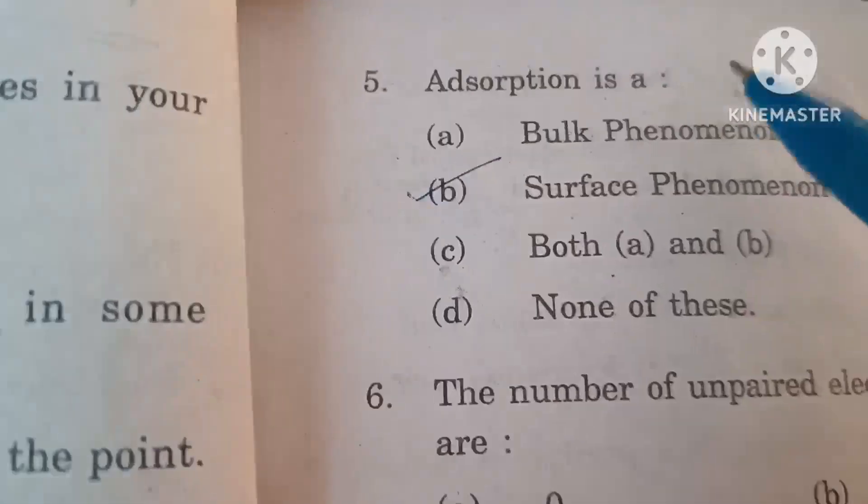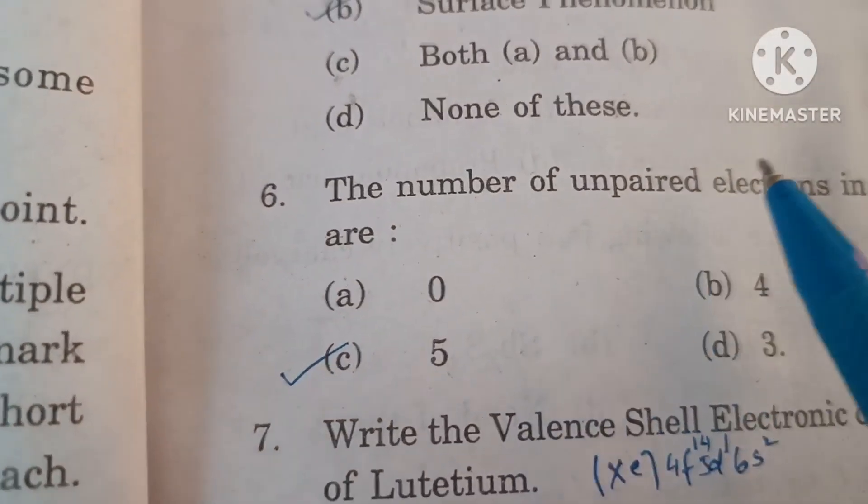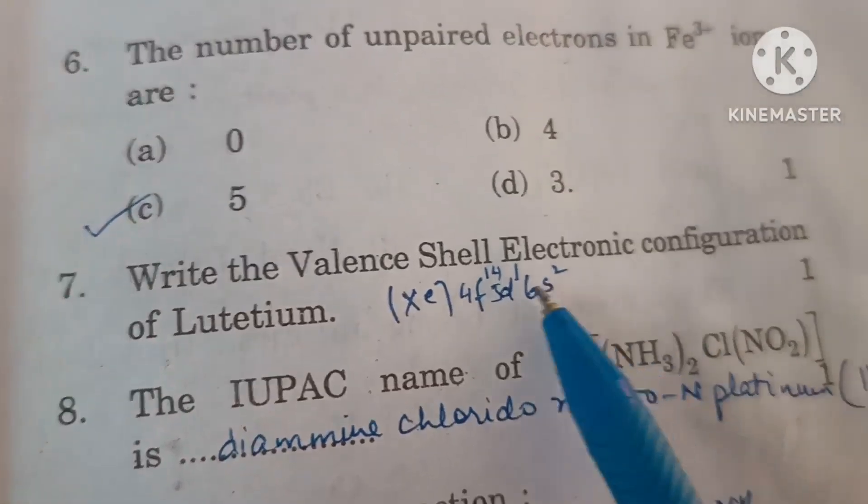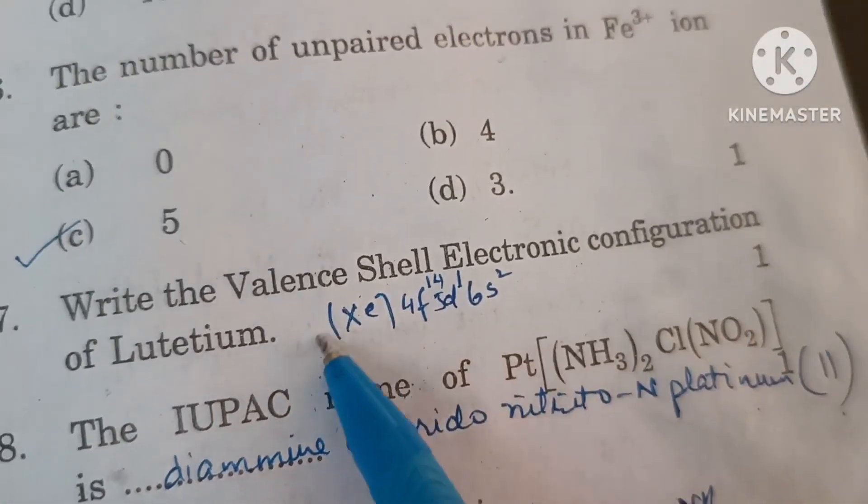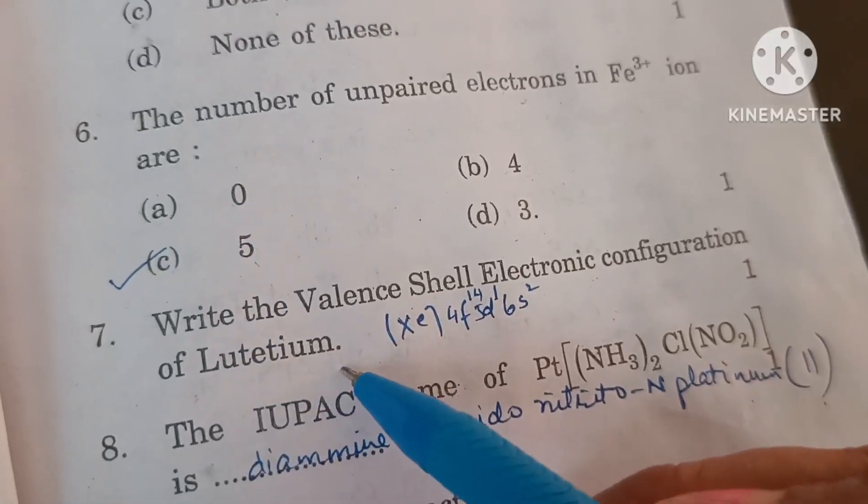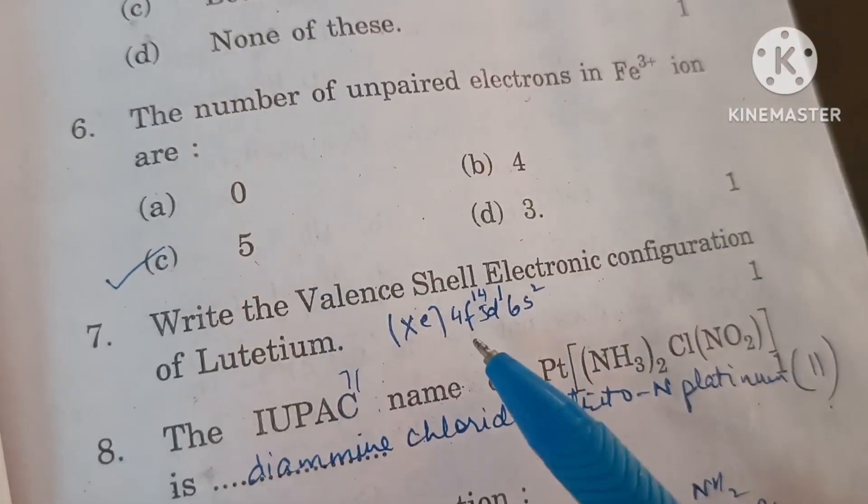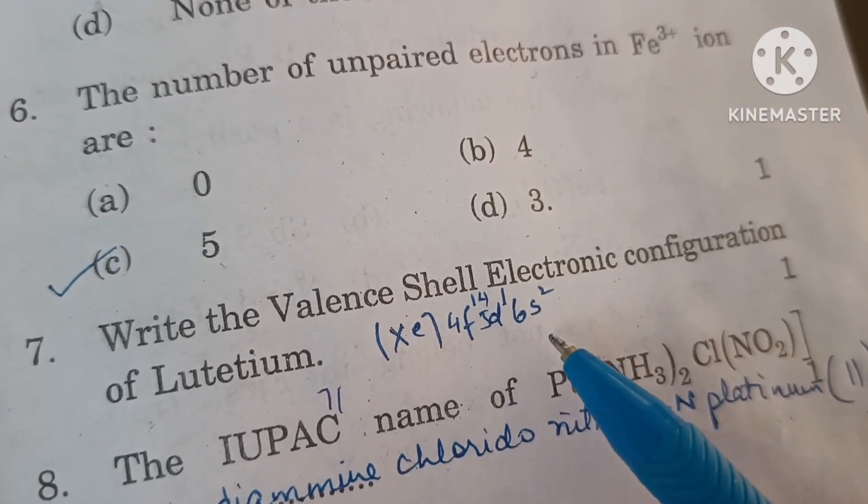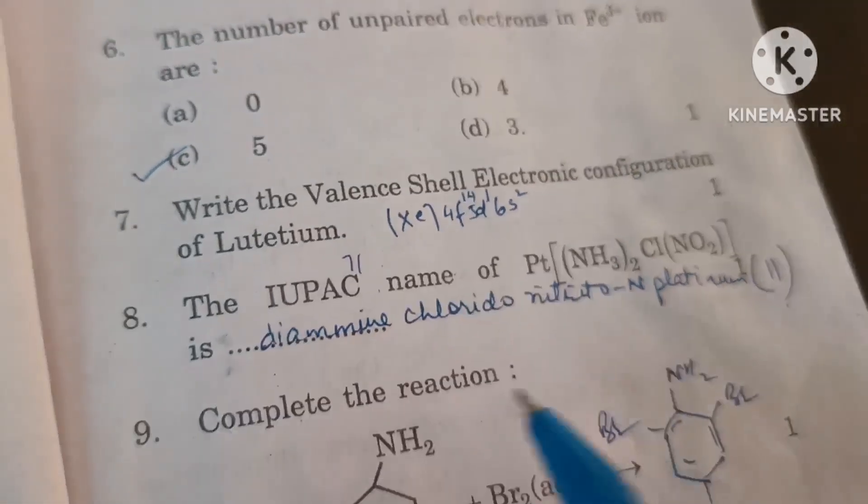The number of unpaired electrons in Fe3+ are 5. Write the valence shell electronic configuration of lutetium with atomic number 71. The configuration will be [Xe]54 4f14 5d1 6s2.